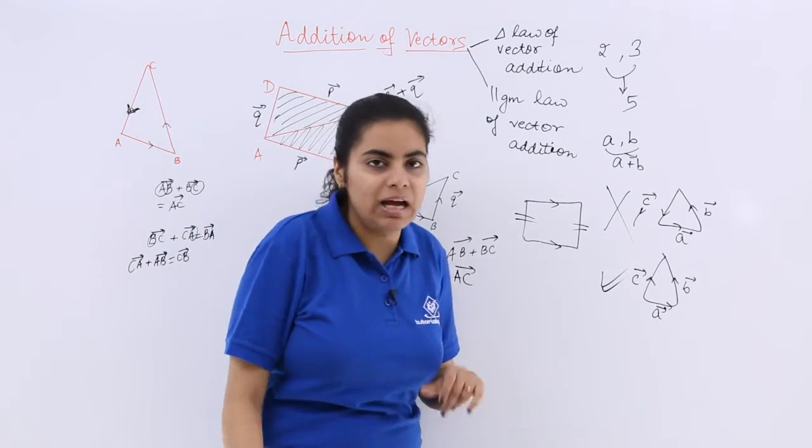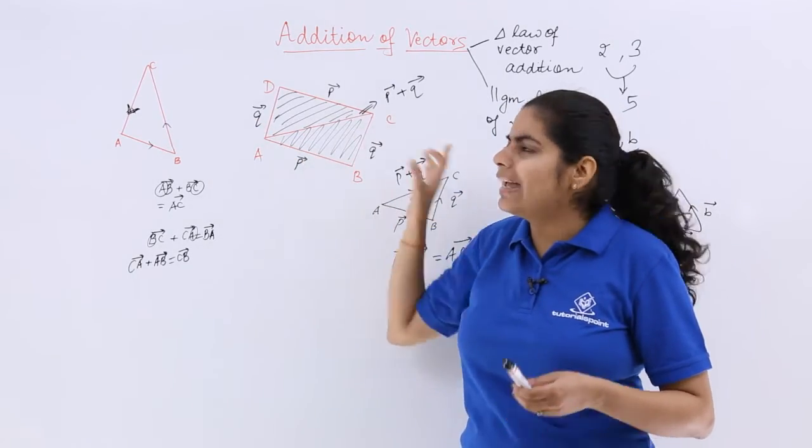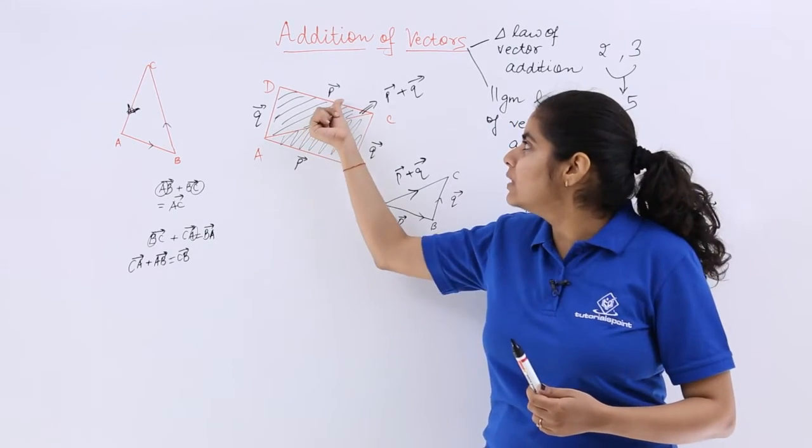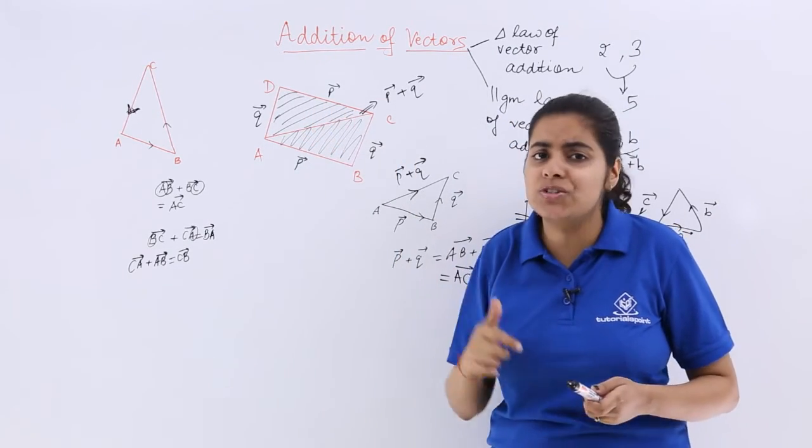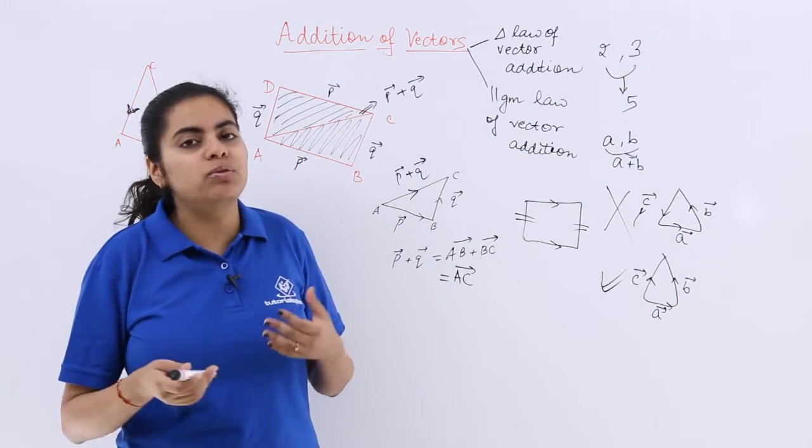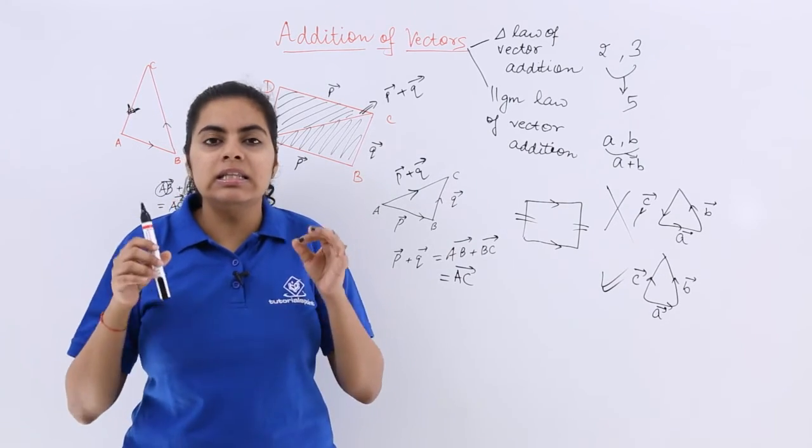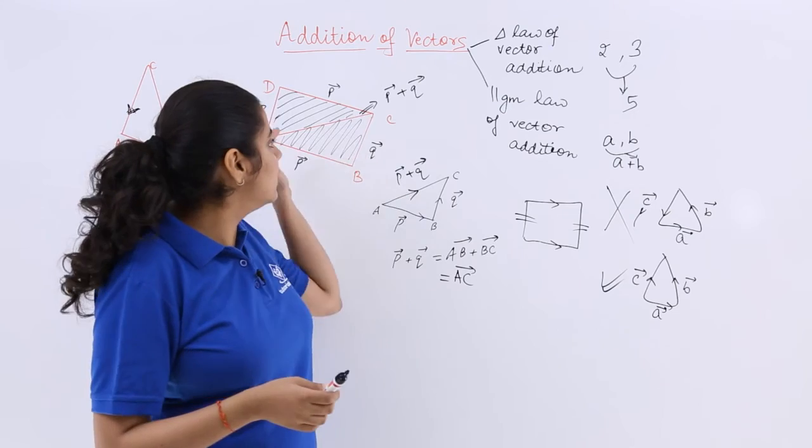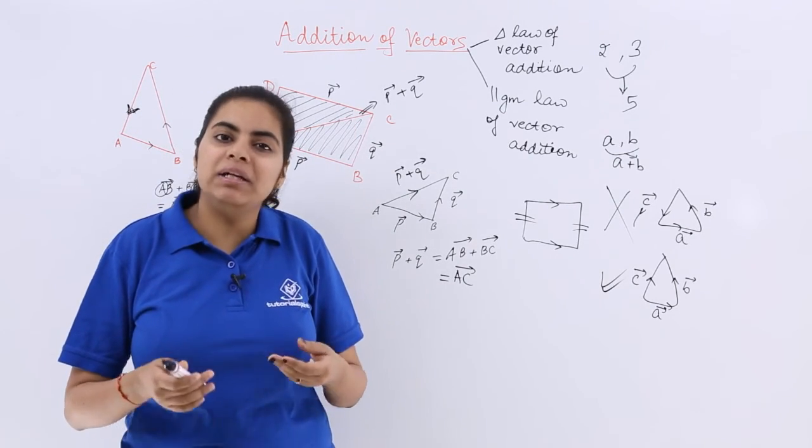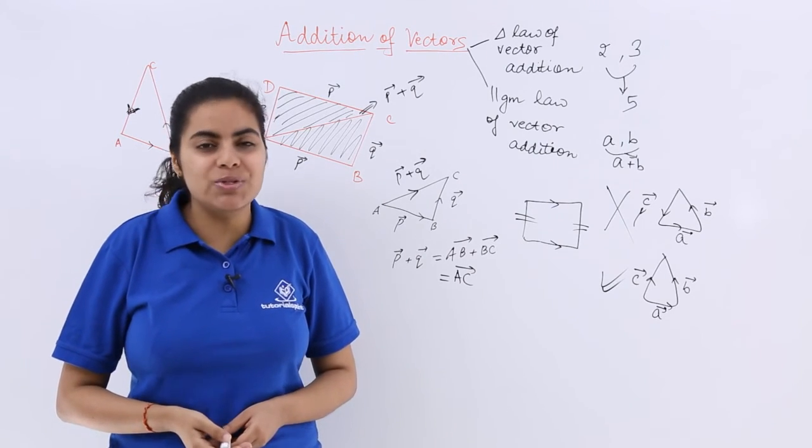Now some of you might definitely have a doubt - why I have taken this triangle only, can I not take ADC? Yes, you can take ADC also, and then also the answer will be the same, P vector plus Q vector. You can try it on your own. So what is parallelogram law of vector addition? If you take or consider the given vectors as the sides of a parallelogram, then the resultant will be obtained by the diagonal of the parallelogram. The sides of the parallelogram can be taken in one particular order, while the resultant will come out to be in the opposite order.